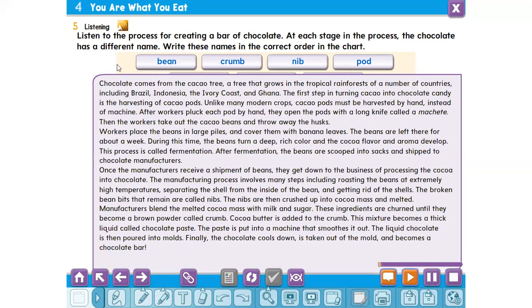Chocolate comes from the cacao tree, a tree that grows in the tropical rainforests of a number of countries, including Brazil, Indonesia, the Ivory Coast, and Ghana. The first step in turning cacao into chocolate candy is the harvesting of cacao pods. Unlike many modern crops, cacao pods must be harvested by hand instead of machine. After workers pluck each pod by hand, they open the pods with a long knife called a machete. Then the workers take out the cacao, or cocoa beans, and throw away the husks. Workers place the beans in large piles and cover them with banana leaves. The beans are left there for about a week. During this time, the beans turn a deep, rich color, and the cocoa flavor and aroma develop. This process is called fermentation.